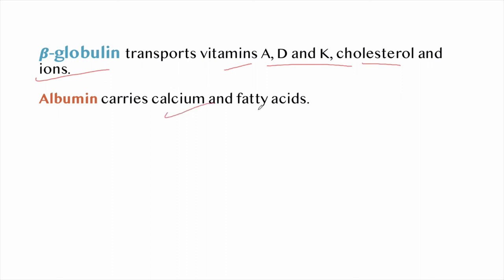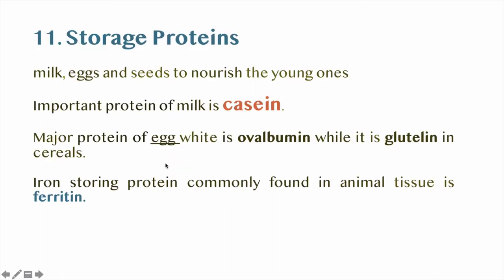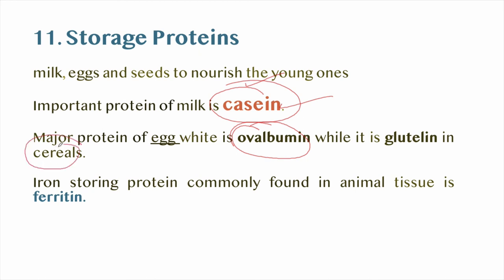Albumin carries calcium and fatty acids. A number of carrier proteins occur in cell membranes for transporting specific materials inside — for example, glucose and amino acids. Storage proteins occur in milk, eggs, and seeds to nourish young ones. The important protein of milk is casein, the major protein of egg white is ovalbumin, and in cereals it is glutelin. The iron-storing protein commonly found in animal tissue is ferritin.